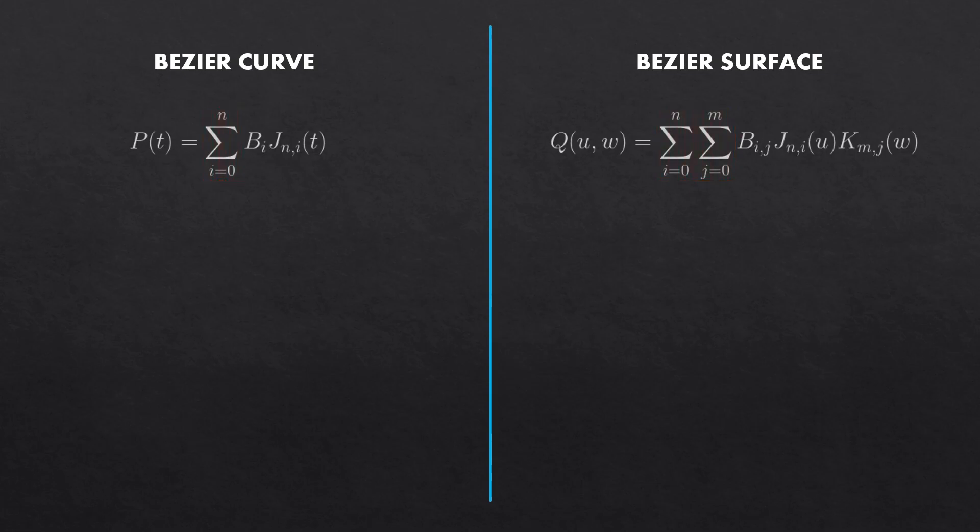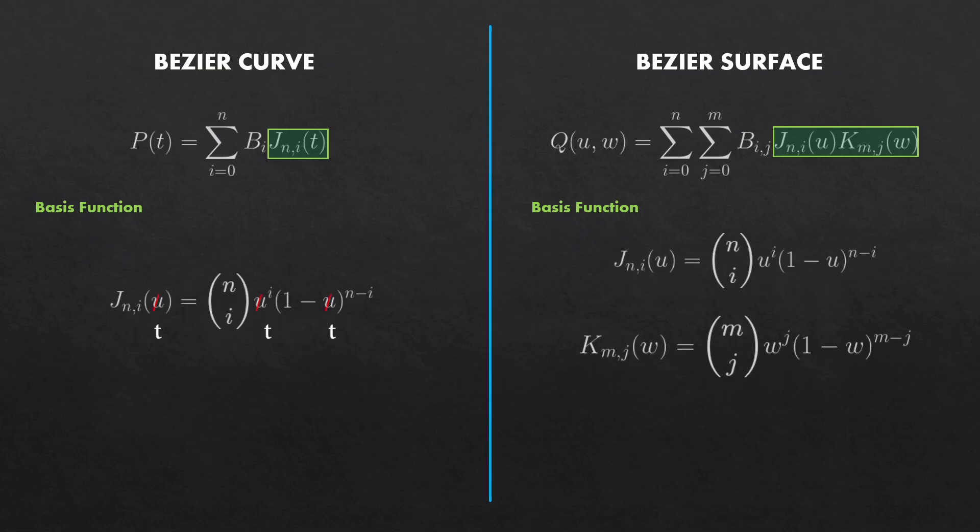All this means is that we will have two for loops instead of one. We also have a second term for the basis functions. Instead of j, now we have j and k and they are defined by their respective equations which both look exactly the same but with different nomenclature. Also notice that the parametric variable is not t anymore.